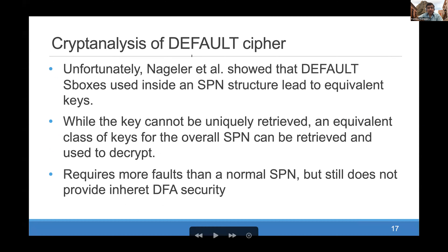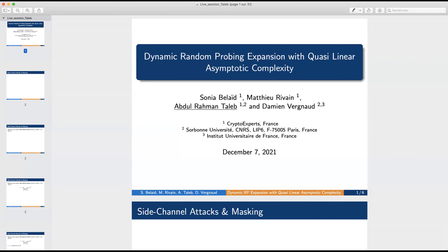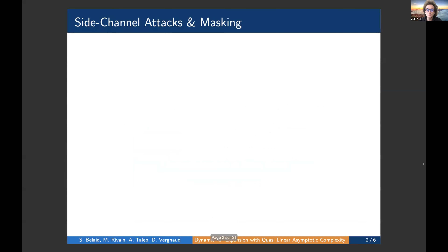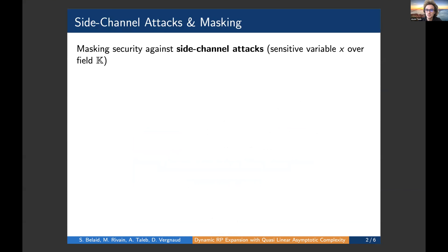We will move to our last paper for this session, to be presented by Abdul Rahman Taleb. So please, Abdul, go ahead, the floor is yours. Hi, can you see my slides? Yes, we can. So I'm going to present our work, joined with Sonia Belaid, Mathieu Rivain, and Damien Vergnaud. In this work, we reason about the security of implementations against side-channel attacks, and the most deployed countermeasure against them is the masking scheme. The idea is to split a sensitive variable into N values called shares, and their recombination should give back the original secret.